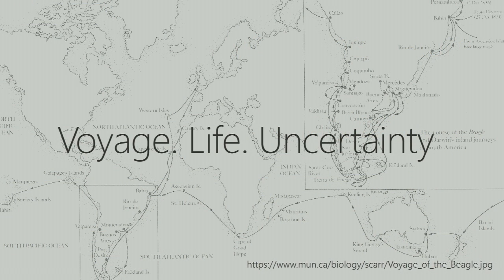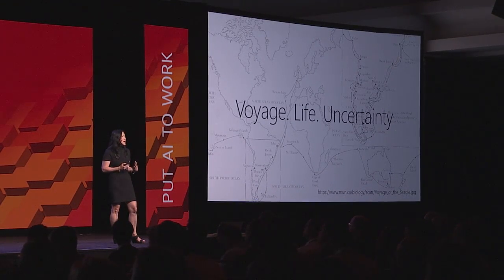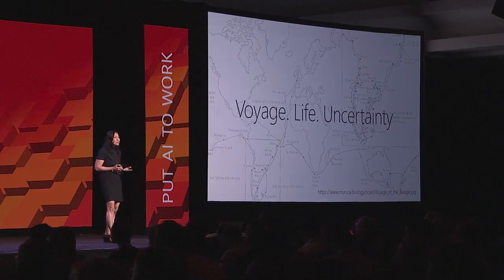One of the first books that I reread was Darwin's Voyage of the Beagle and his uncertainty that he had when he went out on this journey. Life is uncertain. We know AI is just scratching the surface. And as we scratch the surface, we really need to think about this concept of uncertainty and how we can make sure that we program uncertainty and infuse uncertainty right into the basis of when we think about AI.